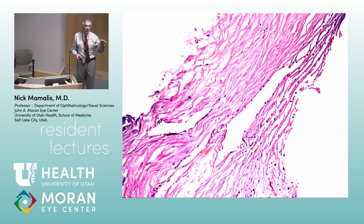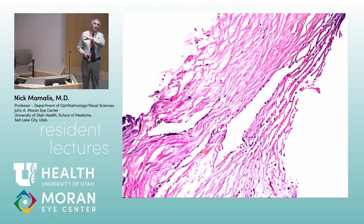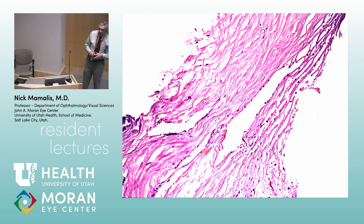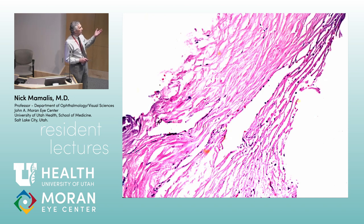So aqueous is made in the non-pigmented part of the ciliary epithelium, circulates through the pupil, provides nourishment to the anterior chamber of the eye, and then eventually percolates through the meshwork — through the juxtacanalicular tissue into Schlemm's Canal — and then eventually into the aqueous veins. When you look at the trabecular meshwork, we talked about the non-pigmented, the pigmented, and the scleral spur.